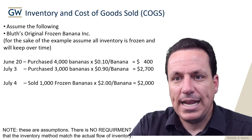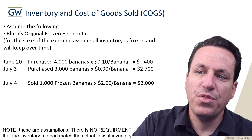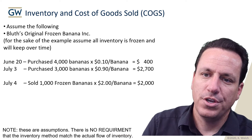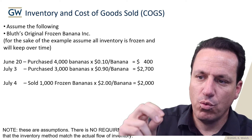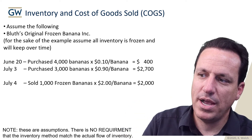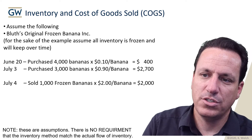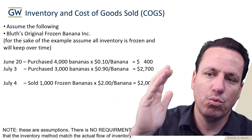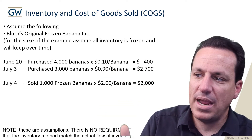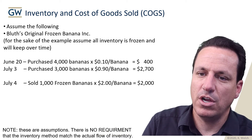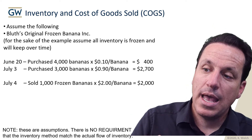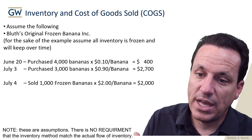The banana stand purchased 4,000 bananas for 10 cents a piece on June 20th for $400. On July 3rd, they purchased 3,000 bananas at 90 cents a piece — a pretty big increase in price — for $2,700. On July 4th, the banana stand sold 1,000 frozen bananas at $2 a banana for $2,000.